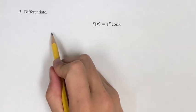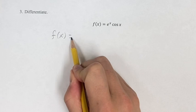In this problem, we're going to be differentiating the function f of x is equal to e to the x cosine x.